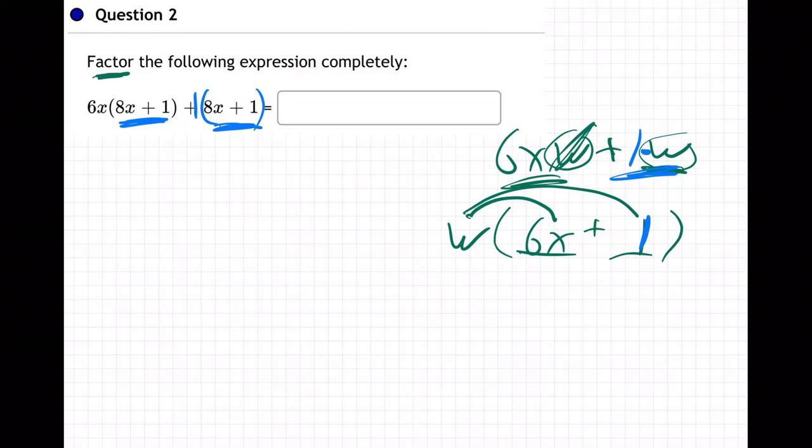So what do they both have in common? 8X or parentheses that should say 8X plus 1, right? Remove it, remove it, start a new set of parentheses. Put the common part in the front, start a new set of parentheses. What's left over? 6X and 1. Done.